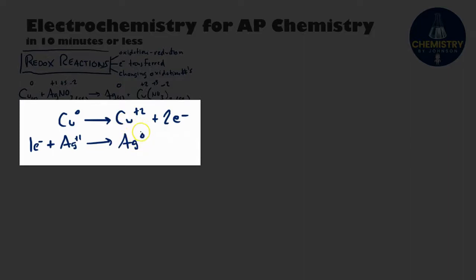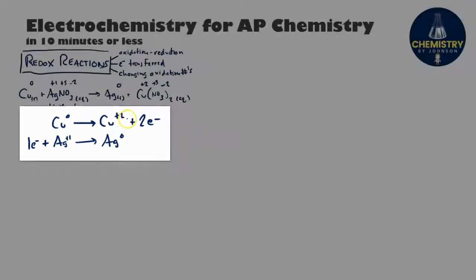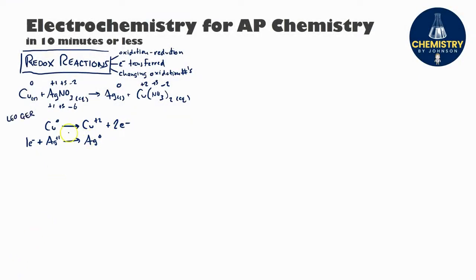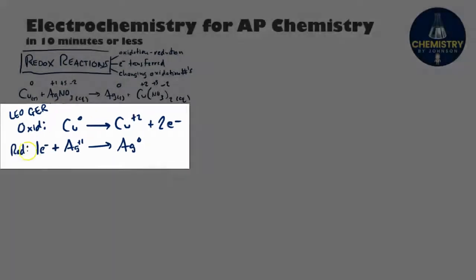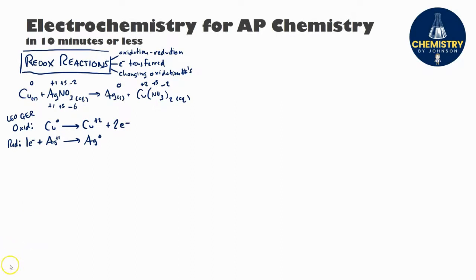What I've just written out are called half reactions. Every redox reaction will be made of two separate half reactions, one where electrons are lost and another where electrons are gained. There's labels for those two half reactions, and we can remember them with a mnemonic device: LEO says GER. LEO stands for Loss of Electrons is Oxidation. GER stands for Gained Electrons is Reduction.